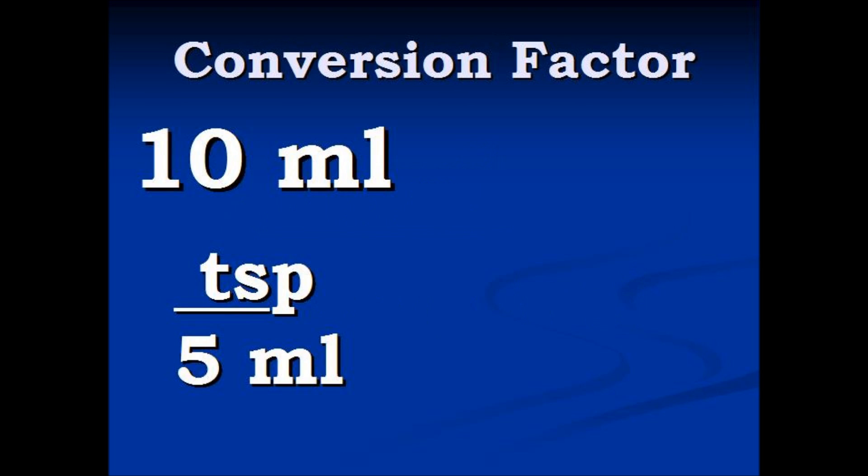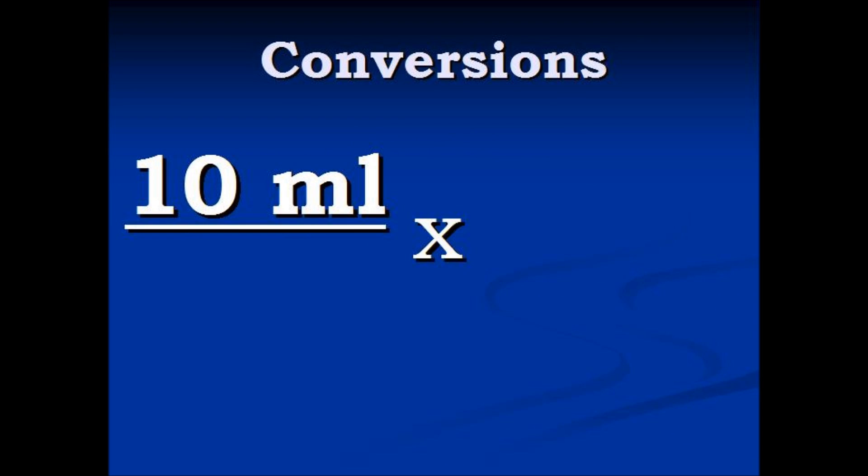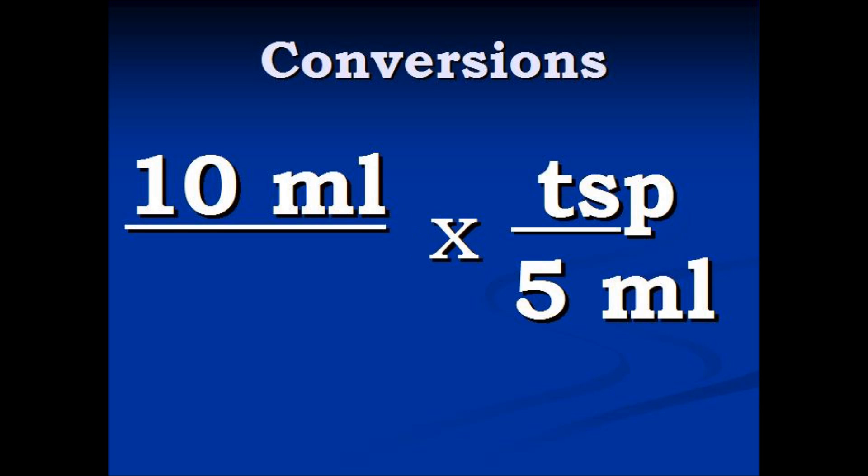We turn it into a ratio. One teaspoon divided by five milliliters equals one. And we're going to multiply that into the ten milliliters.